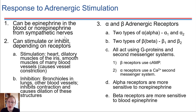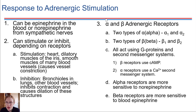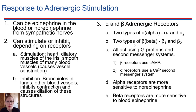This is where things start to get complex with adrenergic receptors. There are a lot of different subtypes and subcategories. There are what we call alpha adrenergic receptors and beta adrenergic receptors, and then there are different subtypes of each — two types of alpha adrenergic receptors and two types of beta adrenergic receptors.